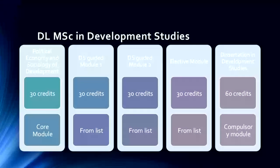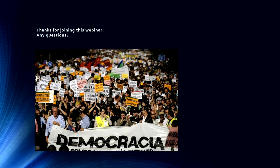The overall program structure consists of the core module in Political Economy and Social Development, guided modules from the development studies list, an elective module from a broader list offered across other departments, and finally the dissertation in development studies — with several modules to guide you through the dissertation process. I'd welcome any questions. If you're interested in the program you're welcome to email me — my email is on the first slide.